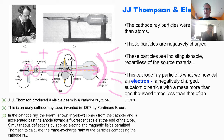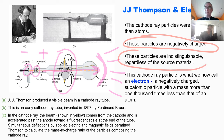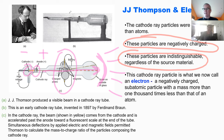J.J. Thomson studied these cathode ray tubes extensively. He determined the particles coming from the metal were negatively charged because the beam moved toward the positive pole of the magnet—opposite charges attract. Crucially, it didn't matter what metal was used—aluminum, iron, gold, silver—the particles always behaved identically. These particles were electrons: negatively charged subatomic particles.